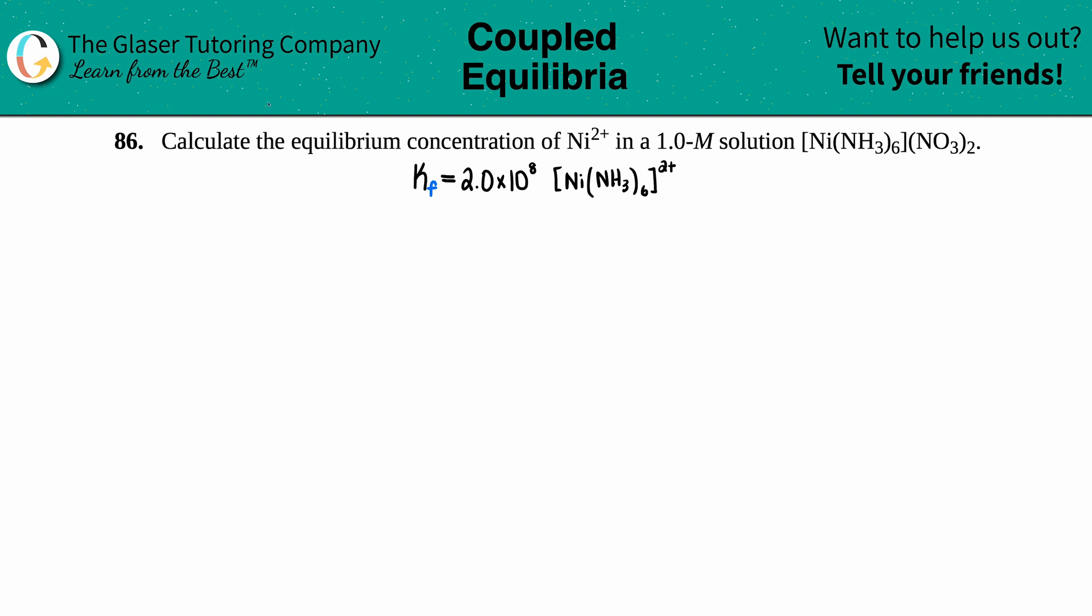Number 86: Calculate the equilibrium concentration of Ni2+ in a 1.0 molar solution of Ni(NH3)6(NO3)2. Okay, so in order for this question to work out we did have to go into the back of the textbook or some charts to find out a Kf value, a formation constant for some component of this ionic compound.